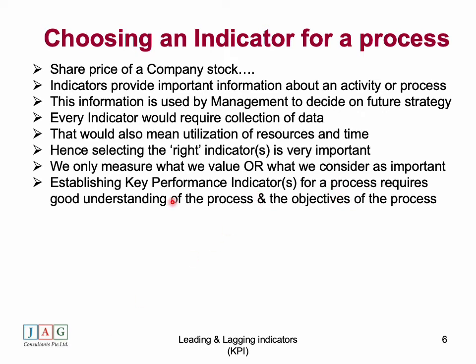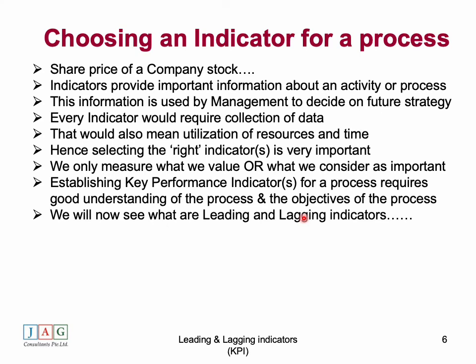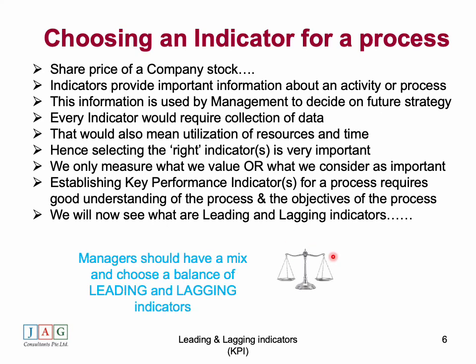To pick the right indicator it's very important to have a good understanding of the process and, more importantly, its objectives. For example, in a bunkering operation the objectives are that it's carried out safely, with no spills, and that the difference between ship figures and barge or shore figures remains within tolerable limits — these are the objectives of that process. It's important to have a mix of leading and lagging indicators in your basket so that your leading indicators take care of the future and lagging tells you about your past.